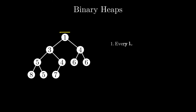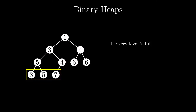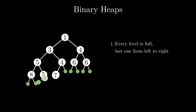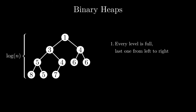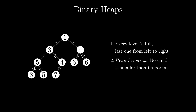First, every level stores as many values as possible, except for possibly the last one, which is filled from left to right. This way we never use more tree levels than necessary. If we double the number of values in the heap, we only need one more level. This means the number of levels increases logarithmically. The second property is the so-called heap property: every value is at least as small as its children. Therefore, the smallest value is always the root.